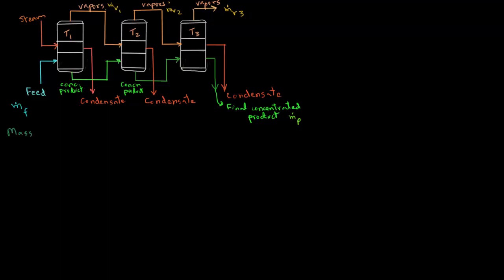Let's first write the mass balance. For the feed, the mass flow rate is m.f entering the bottom of the first effect. So m.f equals the mass flow rate of vapors leaving the first effect, m.v1. Note that those vapors are used as heating medium for the second effect, and therefore they are leaving the system later as a condensate.